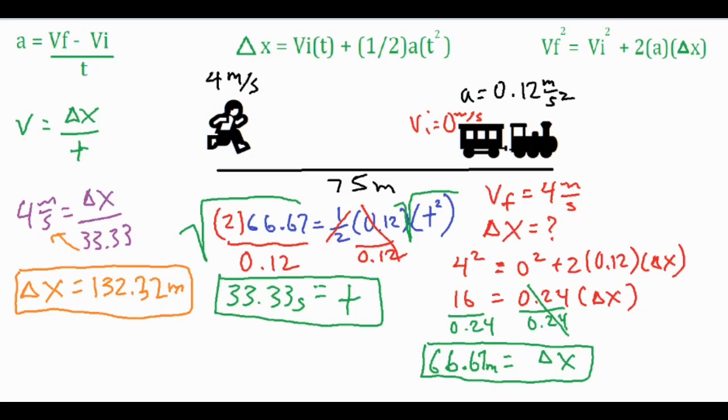Now what we need to do is figure out how far the train has moved. It has moved 66.67, but it started 75 meters away from the kid. If it was right in front of him he would have definitely caught up to it pretty quickly. So we're going to go ahead and add that 75 to the 66.67, and it looks like the train has moved 141.67 meters from that origin.